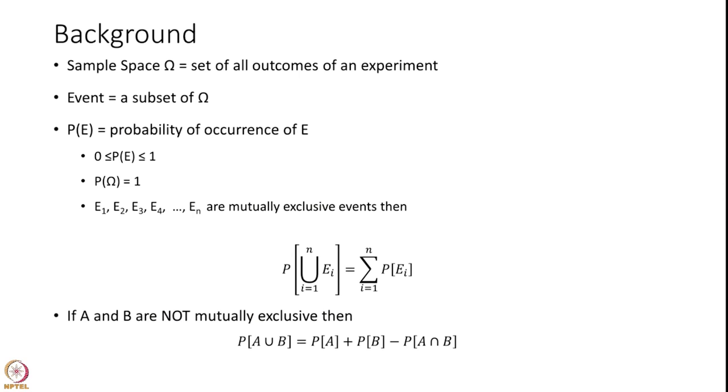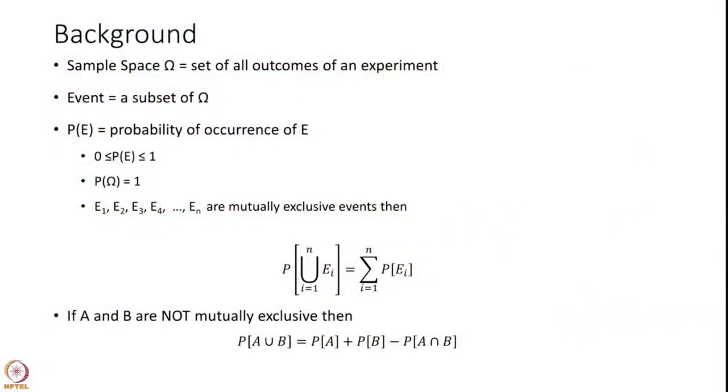There is something called a sample space. When you perform an experiment it has several outcomes. The set of all possible outcomes of an experiment is called a sample space. Any subset of this sample space is called an event in terms of probability, and the probability of occurrence of an event is defined as probability of E.